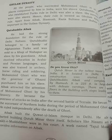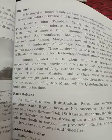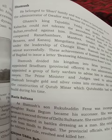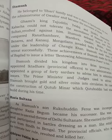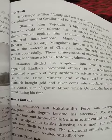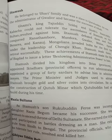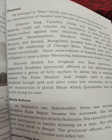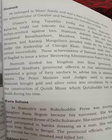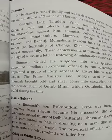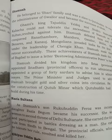The second ruler is Iltutmish, the real founder of Turkish rule in India. He founded the Chahalgani, a group of 40 sardars appointed to advise him on administrative issues. Iltutmish brought gold and silver coins into circulation. During his period, Changiz Khan invaded. He also completed the construction of Qutub Minar, which Qutbuddin Aibak had started.